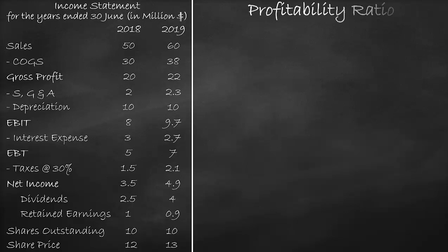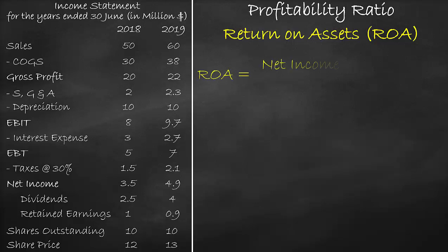Another example of a profitability ratio is the return on assets, or ROA. Return refers to a profit level such as net income or EBIT. The return on assets formula is net income divided by assets.